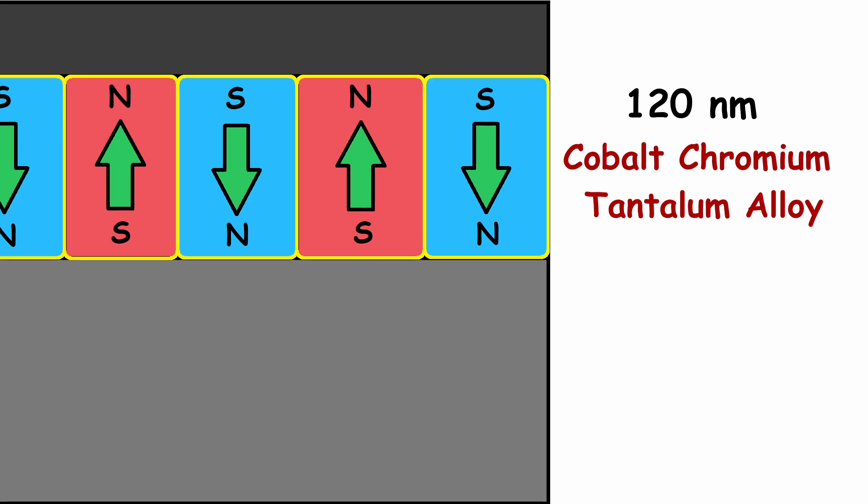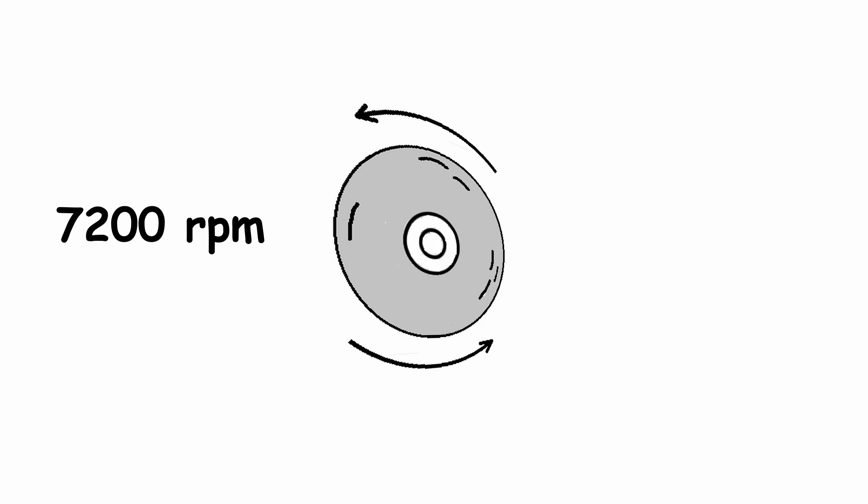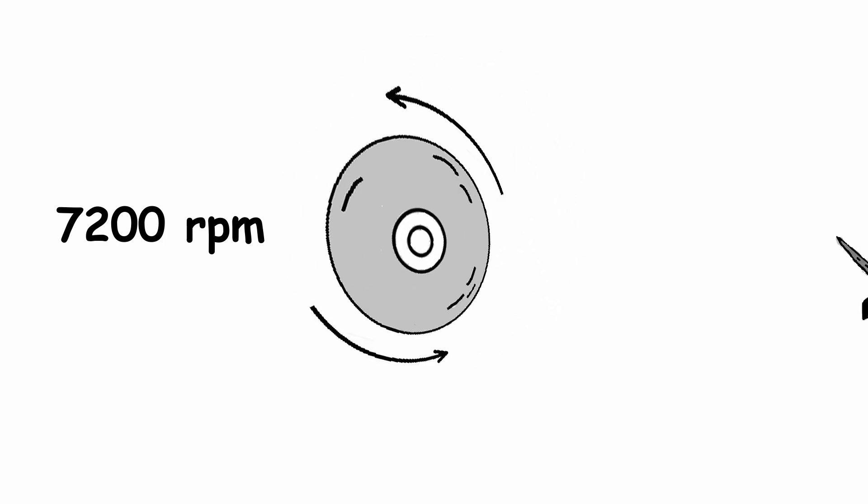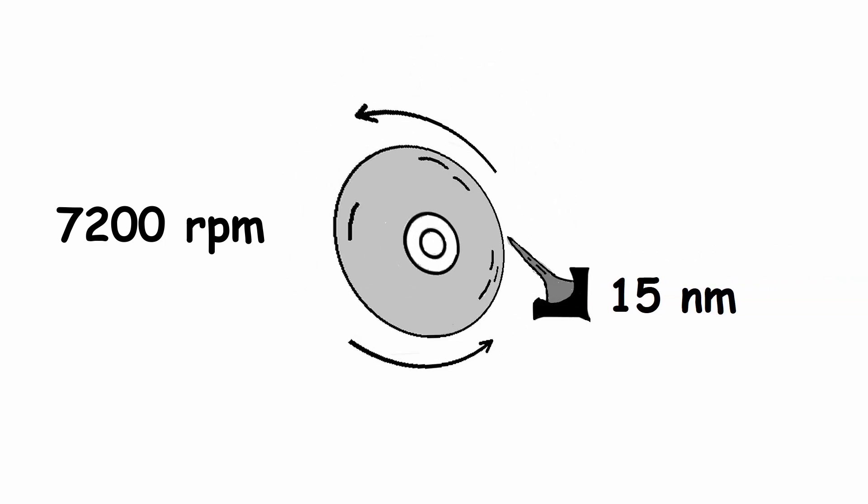This layer is made up of small magnetic regions that can be manipulated by an external magnetic field. The disk spins at 7,200 RPM, with the read write head hovering just 15 nanometers above it. For reference, 15 nanometers is about the width of two DNA strands, or 40 atomic lengths.